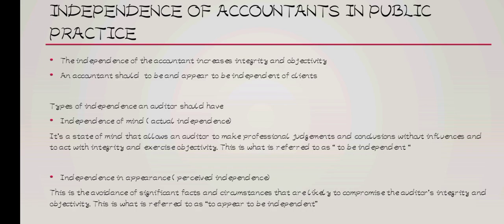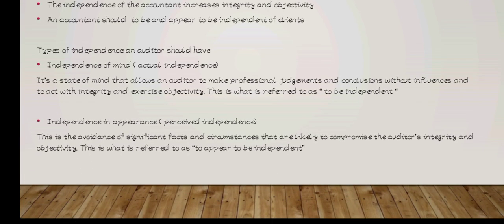Acting with integrity means honesty, and making decisions based on facts means objectivity. This is what is referred to as being independent — independency of mind, or actual independence. The second type is independency in appearance, or perceived independency, where you avoid significant facts and circumstances likely to compromise your integrity and objectivity as an auditor.